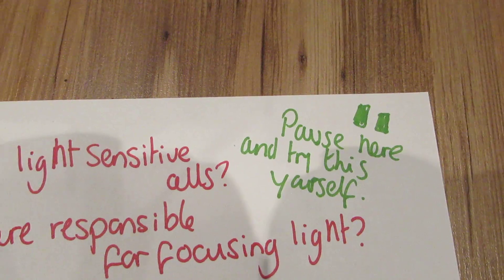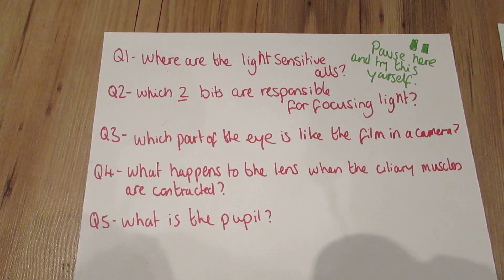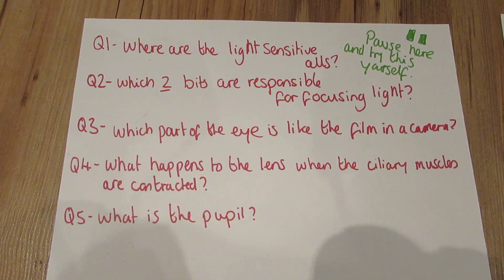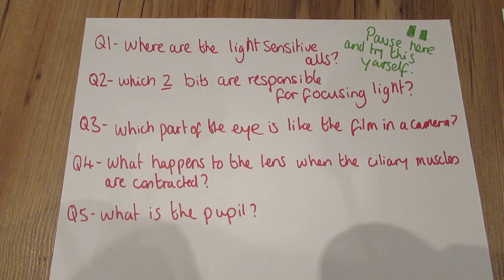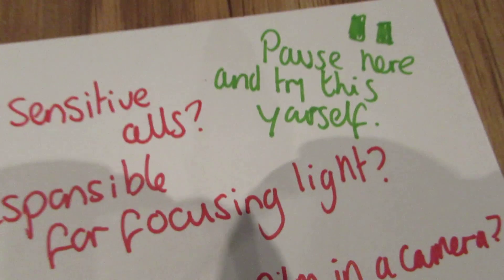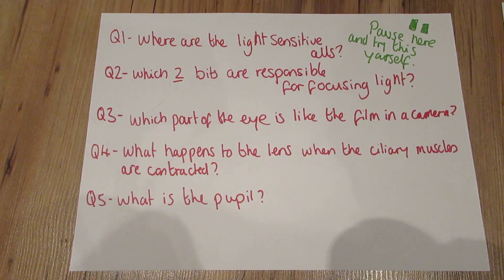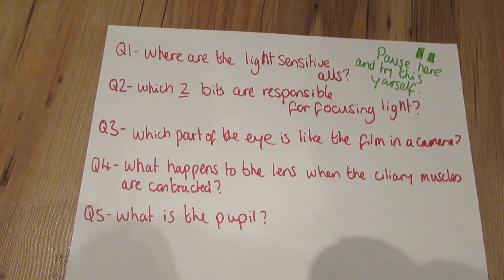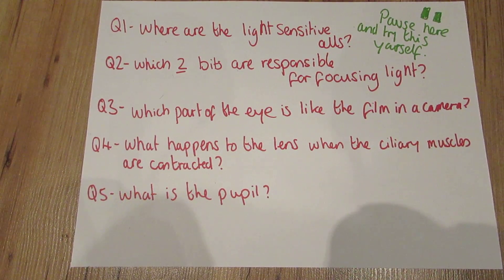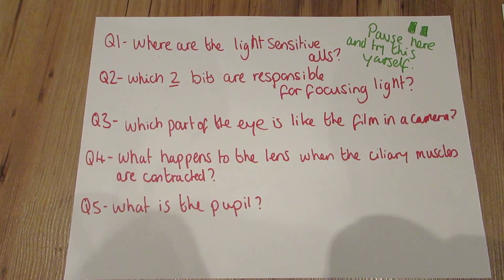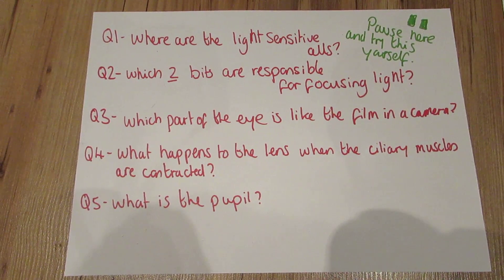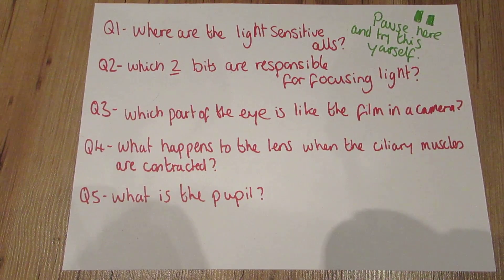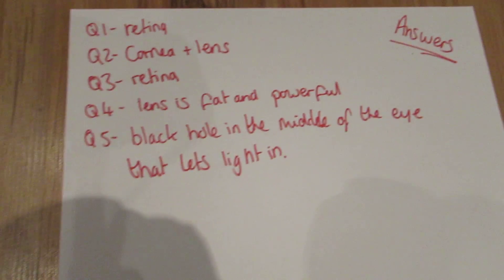Now some more questions — pause and try these five for yourself. Where are the light-sensitive cells? Which two bits are responsible for focusing light? Which part of the eye is like a film in a camera? What happens to the lens when the ciliary muscles are contracted? And what is the pupil? Here are the answers: the light-sensitive cells are in the retina; the cornea and the lens are responsible for focusing light; the retina is like the film in a camera; the lens becomes fat and powerful when the ciliary muscles are contracted; and the pupil is the black hole in the middle of the eye that lets light in.